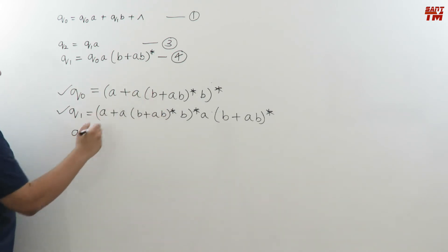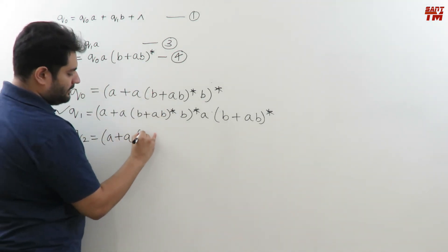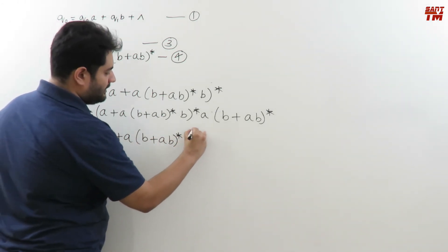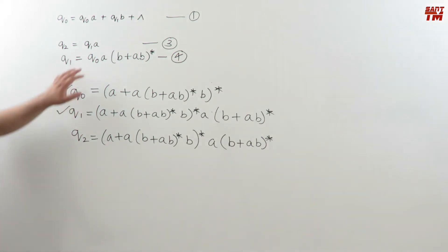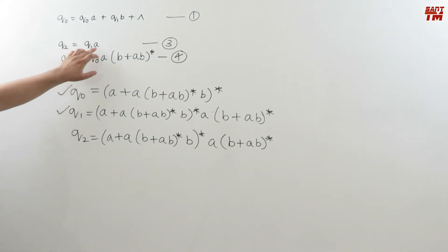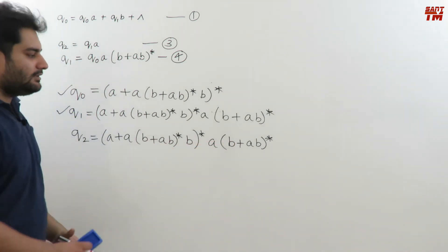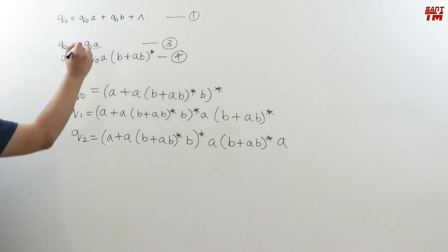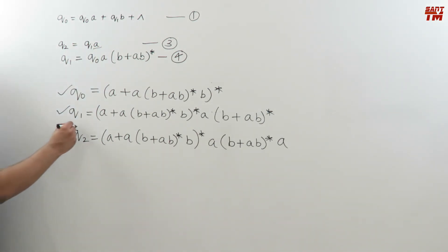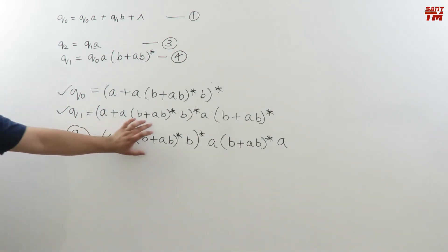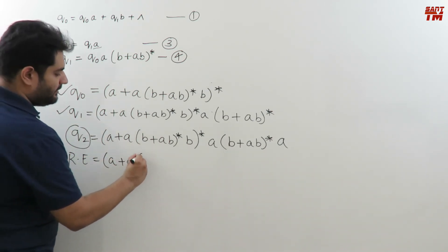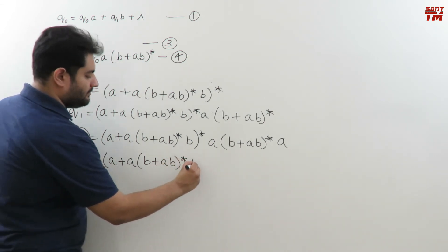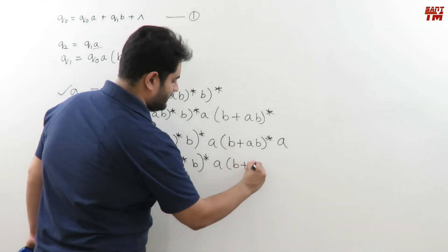q2 = q1·a. Substituting the full value of q1: q2 = (a + a·b + a·b*·b)* · a · (b + a·b)* · a. This is the final equation for q2, which is our final state. So the required regular expression is (a + a·b + a·b*·b)* · a · (b + a·b)* · a.